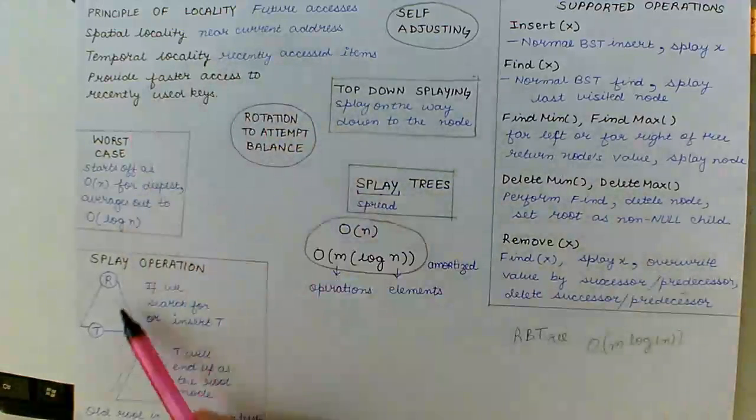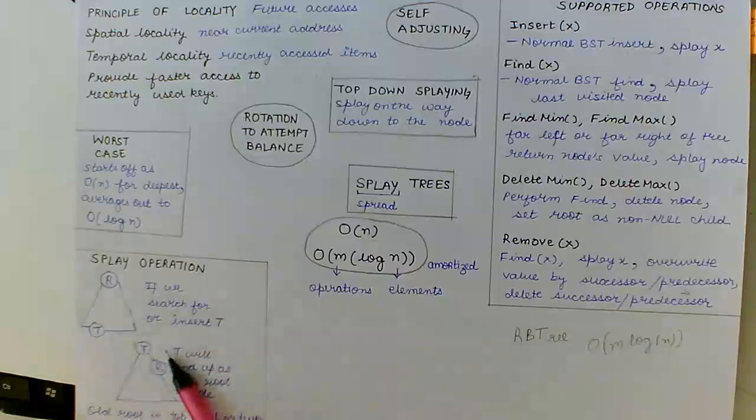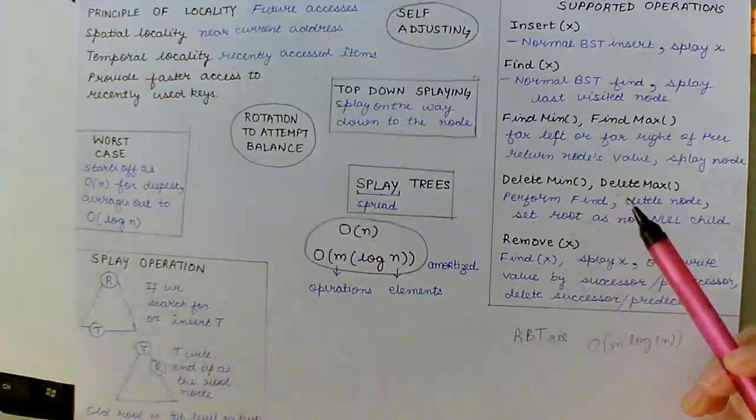Splay trees exploit temporal locality by guaranteeing that recently accessed elements near the top of the tree.